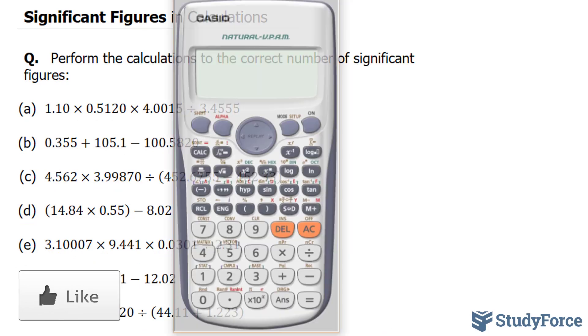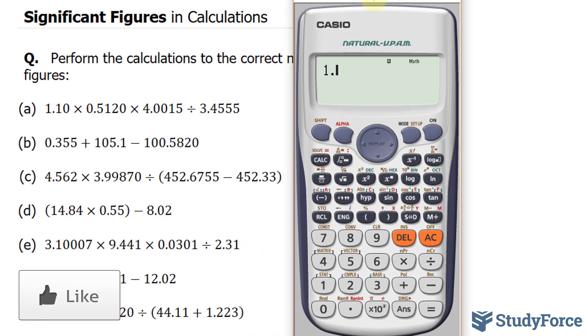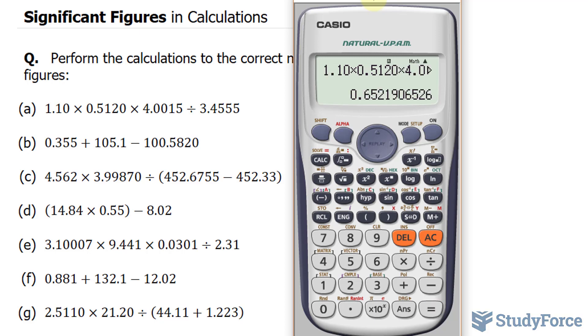So using our calculator, we'll multiply these four numbers: 1.10 times 0.5120 times 4.0015 divided by 3.4555. This gives us 0.65219.